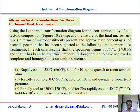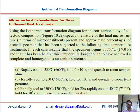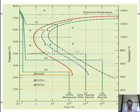The treatment cases are: (A) rapidly cool to 350°C, hold for 10,000 seconds, cool to room temperature; (B) rapidly cool to 250°C, hold for 100 seconds, cool to room temperature; (C) rapidly cool to 650°C, hold for 20 seconds, then rapidly cool to 400°C. What is the resultant microstructure in each case? This is an example problem from Callister.